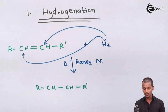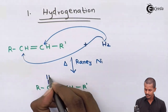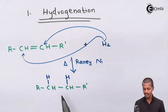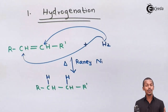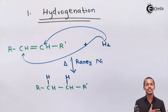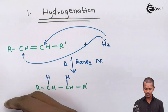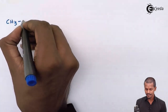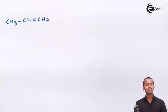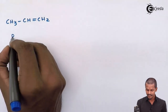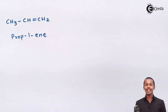R can be an alkyl group or a hydrogen atom. So in this process, an alkene is converted into an alkane. This kind of process where hydrogen is added is known as the hydrogenation process. Let me give you a specific example.